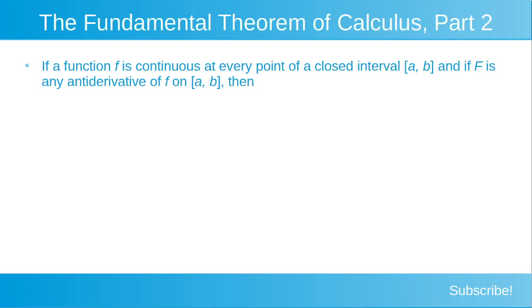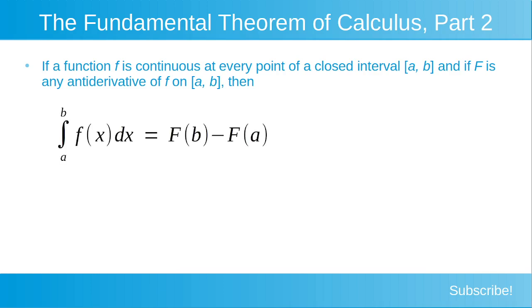We start by stating the theorem. If a function f is continuous at every point of a closed interval from a to b, and if capital F is any antiderivative of the function f on that interval from a to b, then the integral from a to b of f dx is equal to F(b) minus F(a). We're going to explain the proof of this theorem now.